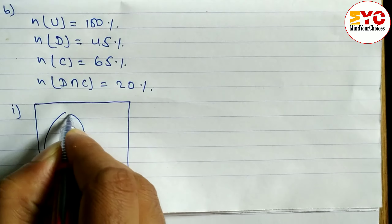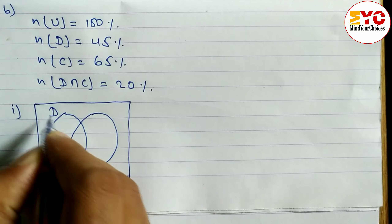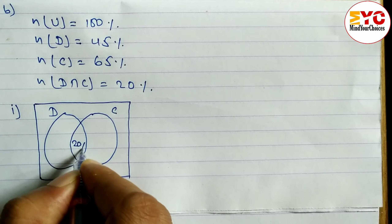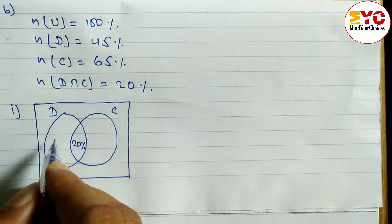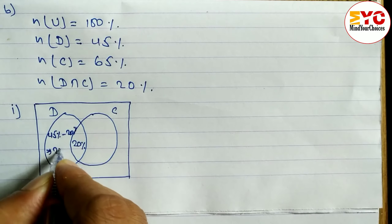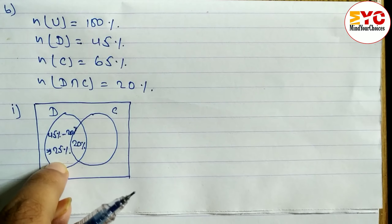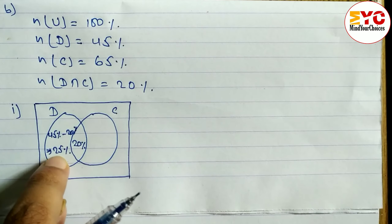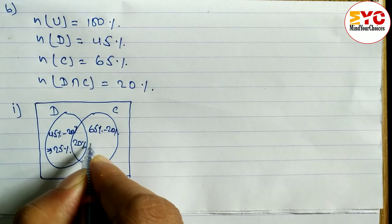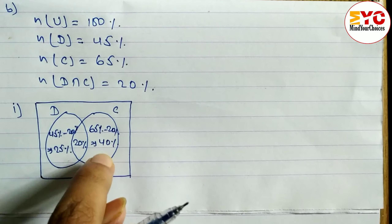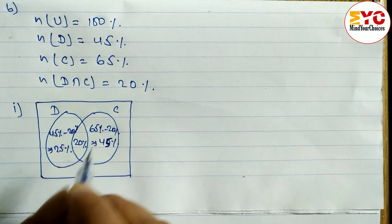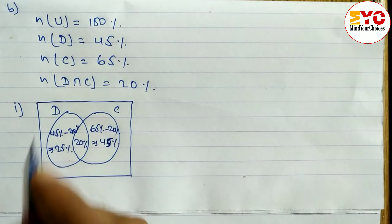Let's draw the diagram. This circle is for D and this one for C. How many percent like both? 20 percent — so we write 20 at the intersection. For Dashain only: 45 minus 20 equals 25 percent, so we write 25 percent in the D-only region. For Chhath only: 65 minus 20 equals 45 percent, so we write 45 percent in the C-only region.